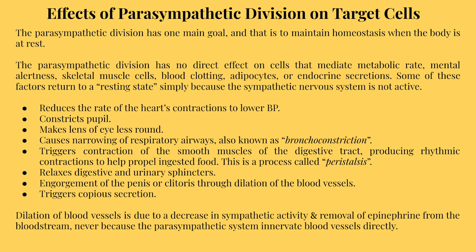The parasympathetic division has little to no effect on glands but does trigger copious secretion. It does not innervate most blood vessels, except specific areas like reproductive organs, though some vessels in the urinary and digestive system do dilate when the parasympathetic system is active. Unlike the sympathetic division, the parasympathetic has no direct effect on metabolic rate, mental alertness, skeletal muscle cells, blood clotting, adipocytes, or endocrine secretions — some factors return to resting state simply because sympathetic activity has ceased, and the body stores glucose and other fuels to prepare for the next round of sympathetic activity.